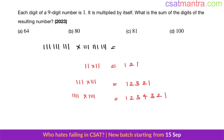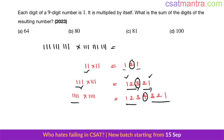Can you see a pattern here? With three 1s you get 1,2,3,2,1 — a 3 in the middle. With four 1s you get 1,2,3,4,3,2,1 — a 4 in the middle. With two 1s you get 1,2,1 — a 2 in the middle. So when you have five 1s, you get 1,2,3,4,5,4,3,2,1 — a 5 in the middle, then decreasing back to 1.